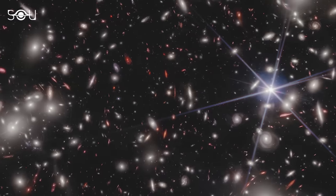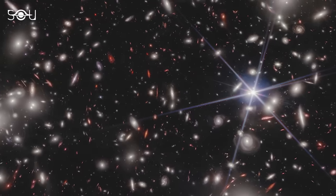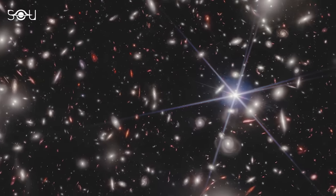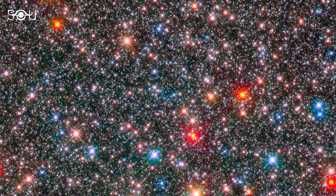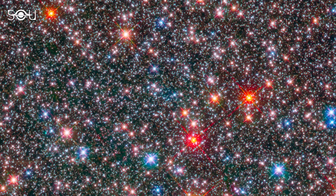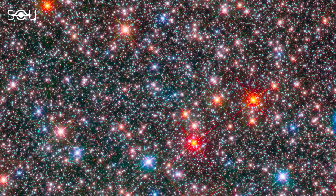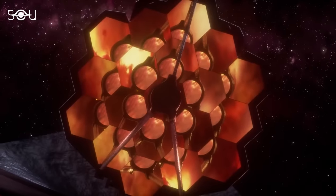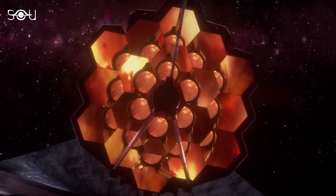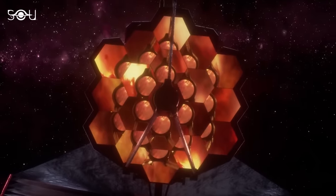So how did astronomers discover Earendel, a lone star so far away in the cosmos? How is it different from the stars we observe in the local universe? Finally, and most importantly, why were astronomers surprised by the James Webb Space Telescope observations of Earendel?